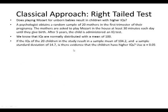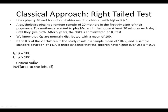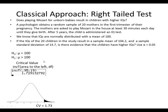Now let's look at an example with a right-tailed test. A psychologist has a random sample of 20 mothers who play Mozart 30 minutes a day until they have their child. Five years later, an IQ test is administered. IQs are normally distributed with a mean of 100, so our null hypothesis is that the mean equals 100. We want to know if the children have higher IQs, so our alternative hypothesis is mu greater than 100. Since we're dealing with means, we use inverse T to find the critical value. Inverse T takes area to the left and degrees of freedom. Since this is a right-tailed test, 5% of our area is to the right, so we find 1 minus 0.05.